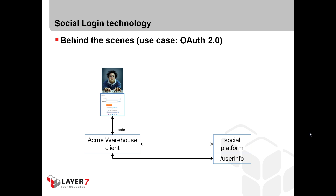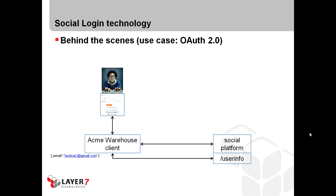This authorization code is then transported back to the Acme Warehouse client as part of the URL. The client will take this code and pass it on to the social platform to exchange it for an access token. At this point the Acme Warehouse client is able to access protected resources authorized by the user, but it has no idea who the user was. To get the user name, the client has to call an API on the social platform and pass in the access token. The access token is used at the social platform to provide the user information, returning an email address associated with the user who authorized the client web application.